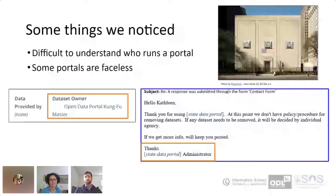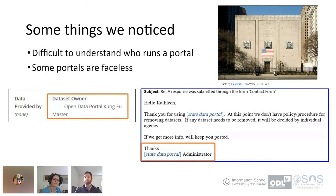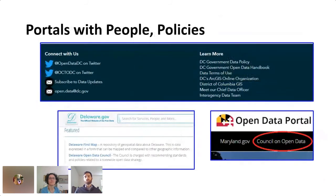We have some examples here of our correspondence. One portal had a data set owner who called themselves the 'Open Portal Kung Fu Master' — kind of cool, but also it's hard to tell who you're emailing. And Kathleen got a reply signed just 'portal administrator.' Not all portals are like this, though — some have really great contact and documentation information, which builds trust; the user knows where to go if they're looking for something. This is Delaware, Maryland, and DC, and there are definitely other examples with great contact and documentation.